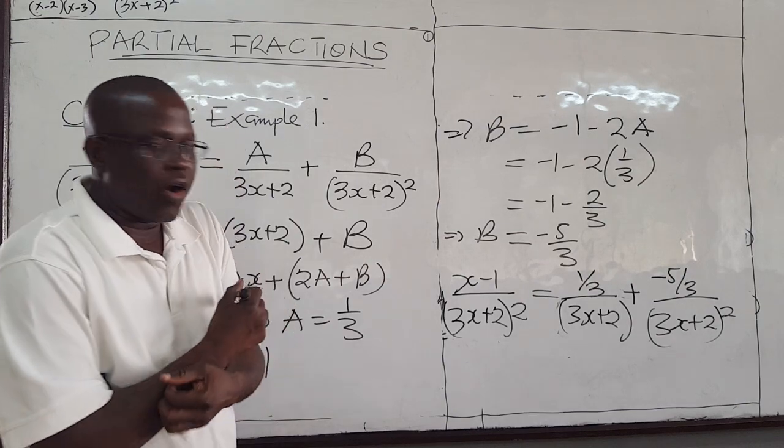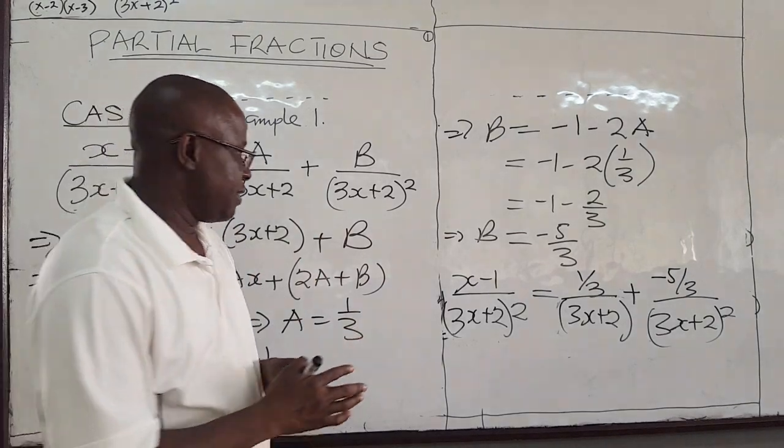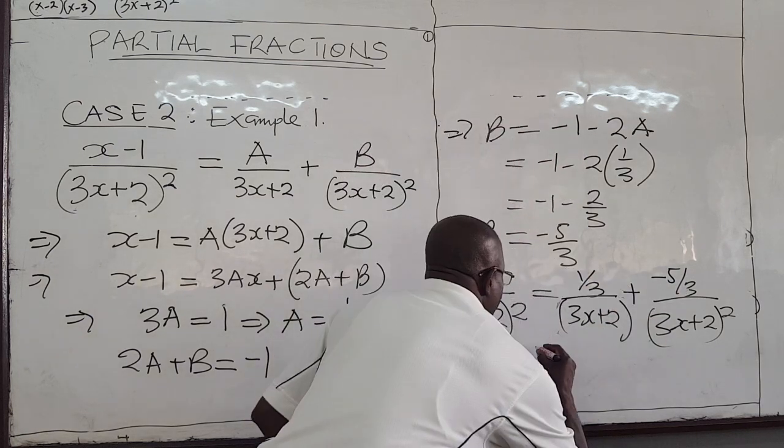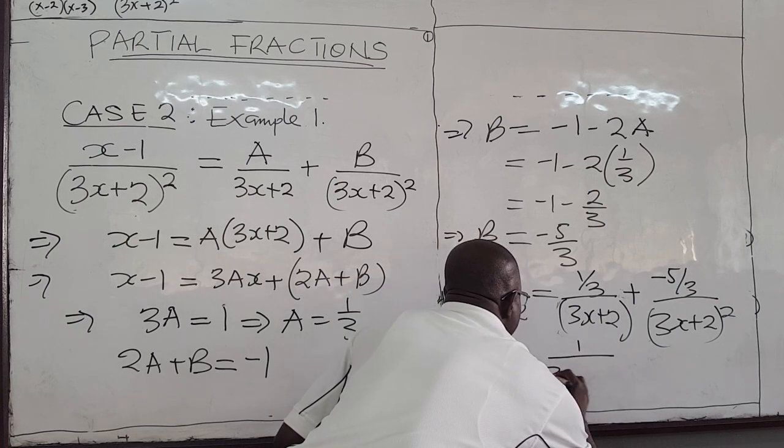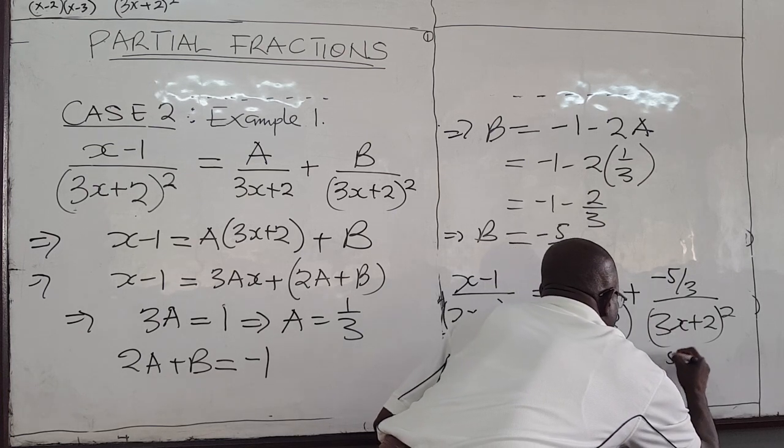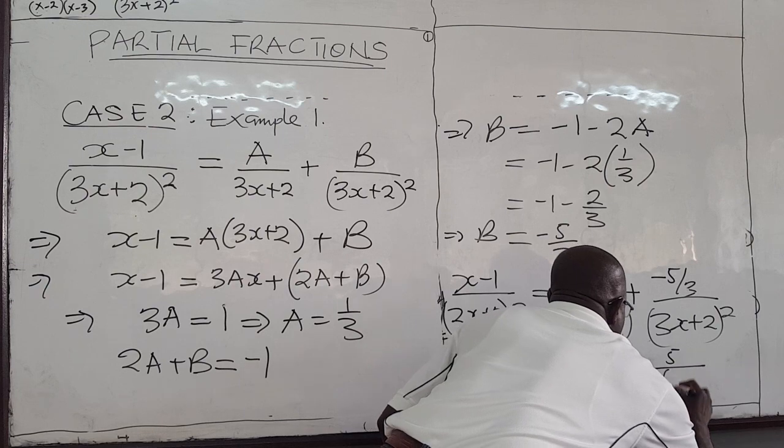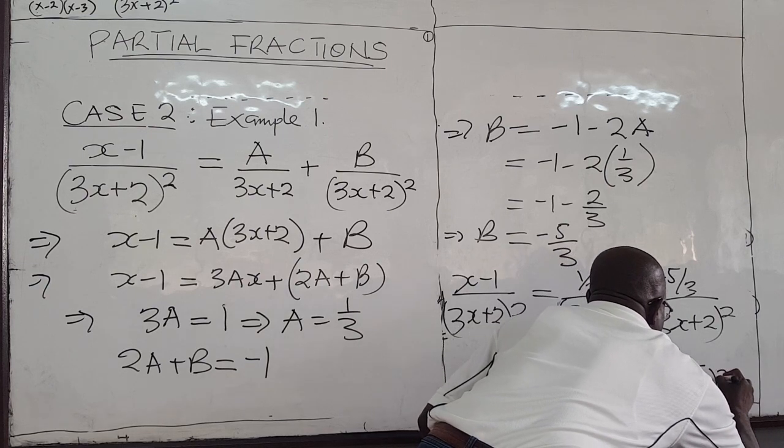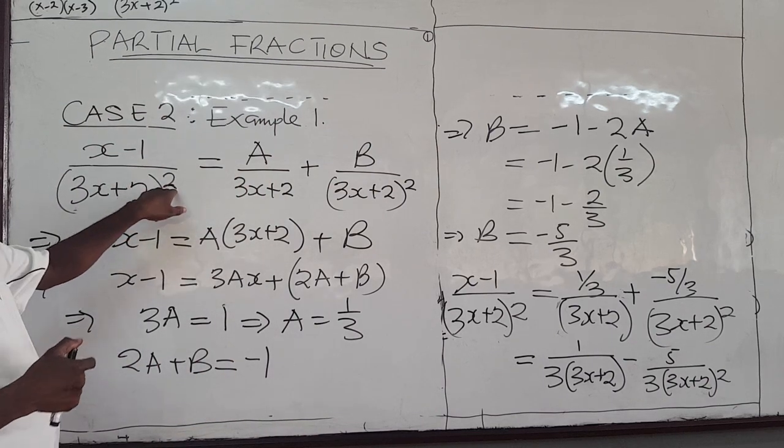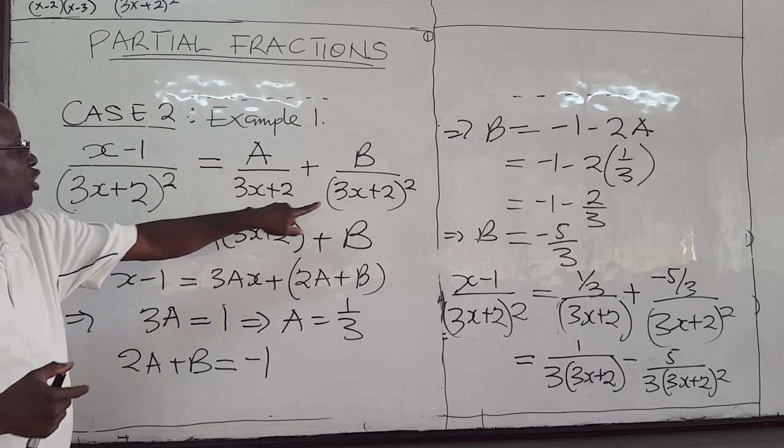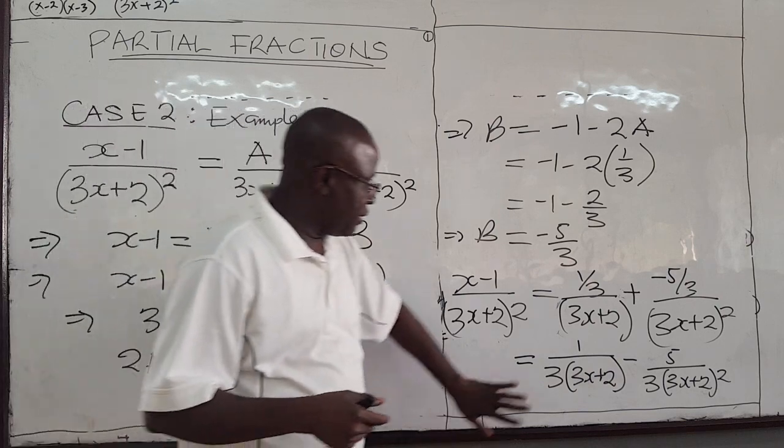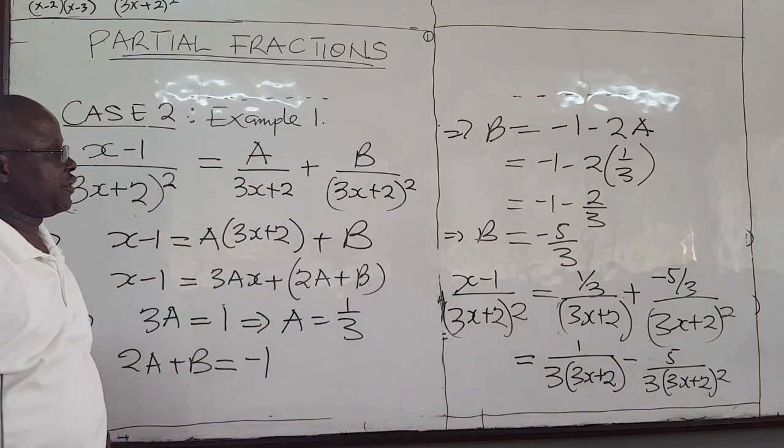You can leave it as this, or you can write it in a more elegant way. You can rewrite this. You can bring the 3 down, you can bring this 3 down, the negative there. And this becomes 1 over 3 into 3x plus 2. I have a negative 5, the 3 comes down, and I have 3x plus 2 all raised to the power of 2. So whenever you have a linear repeated, this is how you do it. This has to be squared. Remember to do that, and then you solve for your A and B, and then you can write your fraction as partial fractions.